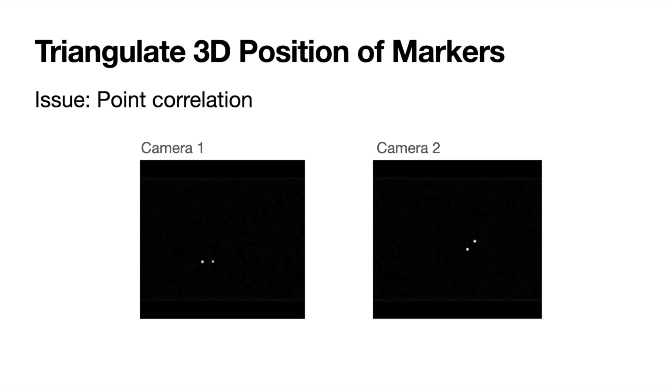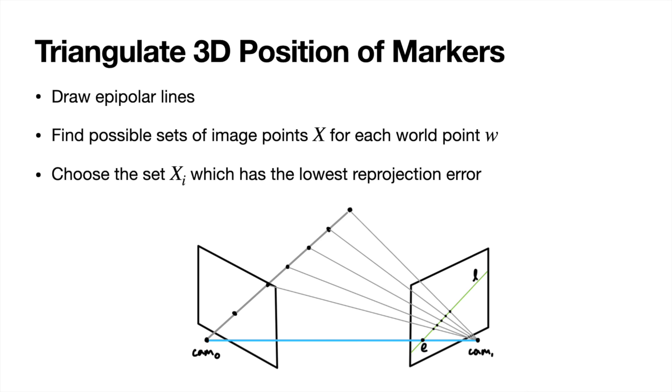To solve this problem, we exploit something called epipolar lines. Essentially, if we see a point in camera 1, we know that its corresponding point on camera 2 has to be somewhere along this green line. This is because the point in camera 1 has no depth information. The marker could be here, here or here. We don't know how far away from the camera it is.